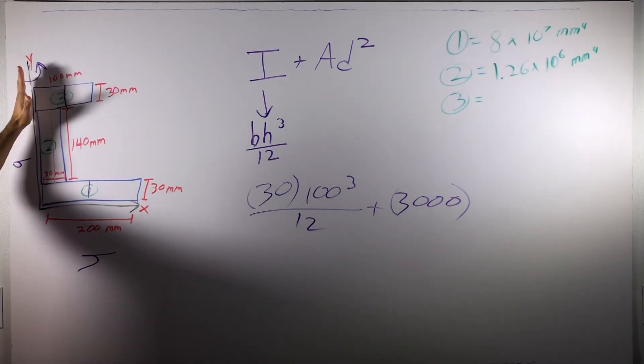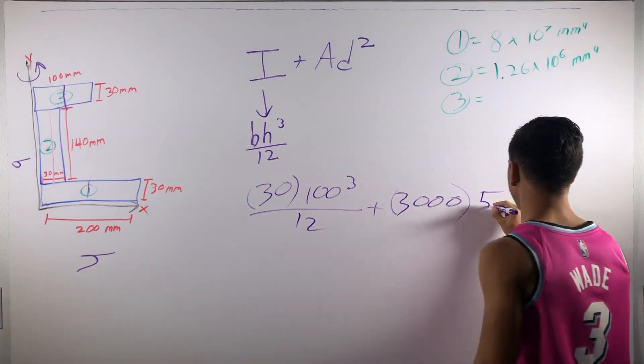So, it's 100 for the height. So, it would just be 50. So, our D is going to be 50. Don't forget to square that.